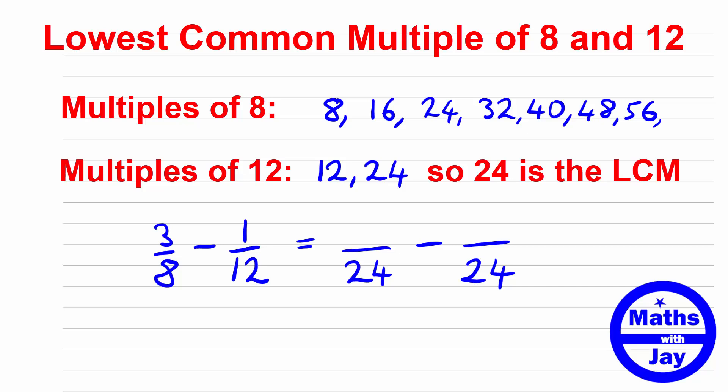So I've multiplied the 8 by 3 to get 24 so I'll multiply 3 by 3 to get 9, and then 12, I've multiplied 12 by 2 to get 24 so I'm going to multiply 1 by 2 to get 2. So 3/8 is 9/24, 1/12 is 2/24, so that gives me 9 minus 2 divided by 24, so that's 7/24.